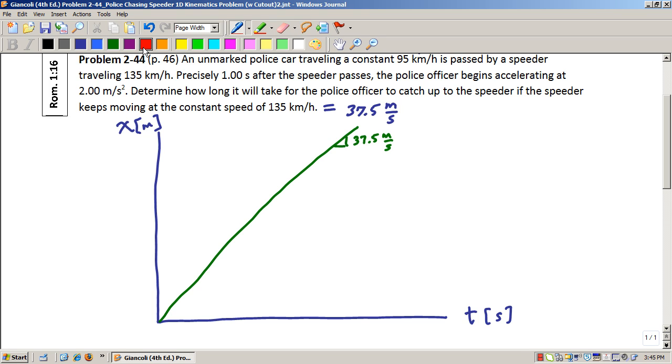The police is going at a slower rate of 26.4 meters per second, but then after one second, let's suppose one second is right over there, the police begins to accelerate, and so the curve becomes nonlinear until their positions are one and the same.